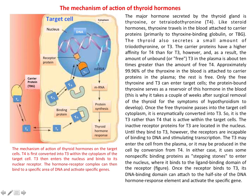When it enters inside the nucleus, the receptor for T3 hormone is present in the nucleus — it is a nuclear receptor. Once T3 is released from its binding protein, it can enter inside the nucleus and bind to its receptor. This hormone-receptor complex can then bind to a specific region in the DNA, activating a specific gene in the form of mRNA. This mRNA comes into the cytoplasm and synthesizes a specific protein, and thus the thyroid hormone response takes place.